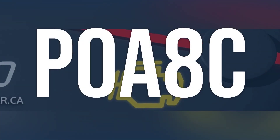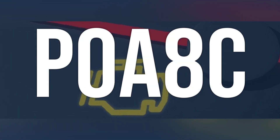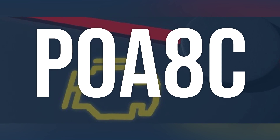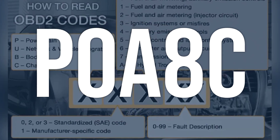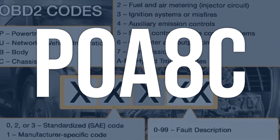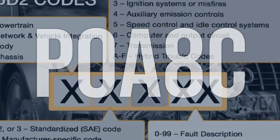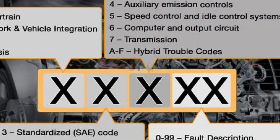OBD2 code P0A8C means that the 14-volt power module system voltage is unstable, causing low-voltage systems to not operate.